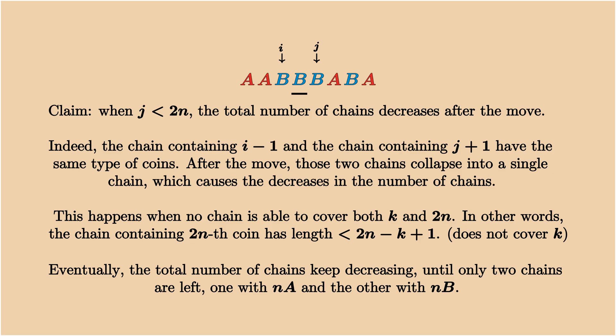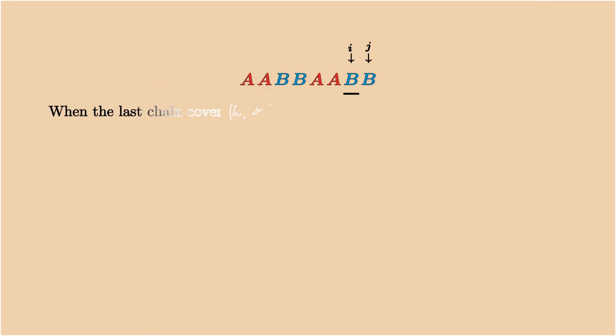The remaining question is whether we can guarantee the decrease. To answer it, we put ourselves into the case where both k and 2n are covered by the same chain. In this case, we take the chain out during the move and put it in the front on the left-hand side.